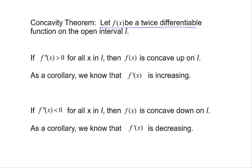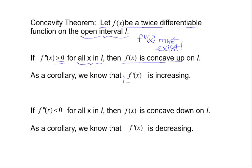First, f must be twice differentiable on some open interval — in other words, f double prime must exist. If f double prime is positive for all x in the interval in question, then the concavity theorem guarantees f will be concave up on that interval, and as a corollary, f prime is increasing. If the second derivative is negative for all input values on the interval, the concavity theorem guarantees f is concave down over that entire interval, and for free, we get that f prime is decreasing.